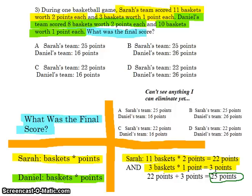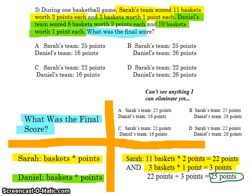The first part we're going to work out is Sarah's team. The problem — highlighted in yellow — says Sarah's team scored 11 baskets worth 2 points each and 3 baskets worth 1 point each. So first I multiply 11 baskets times 2 points: 11 times 2 equals 22 points. Then 3 baskets worth 1 point each: 3 times 1 equals 3 points. Now I add those together: 22 plus 3 equals 25 points.